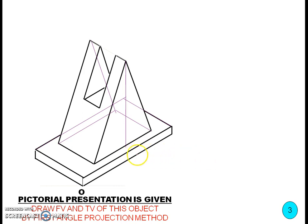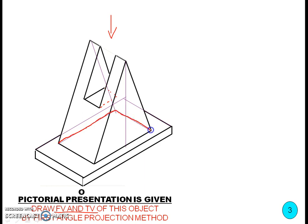Now we go to another pictorial representation. For this object, we have to draw only the front view and top view. In the front view, we can see a triangular plane and a rectangular plane. For the top view, looking from the top, we can see one line and a rectangle. There are also two hidden edges in the front view that are not visible, so we show those edges as hidden lines or dashed lines.